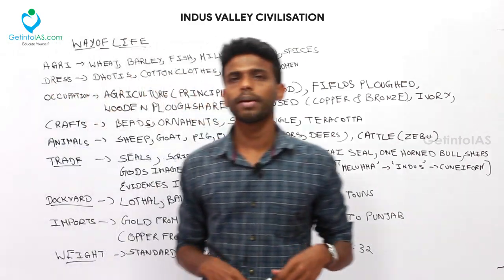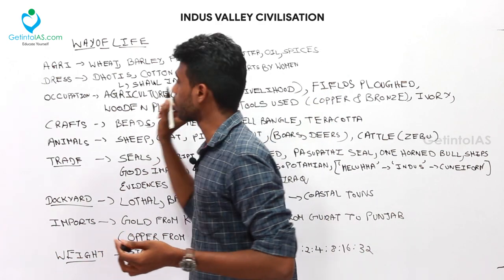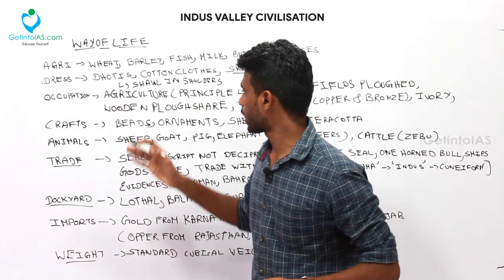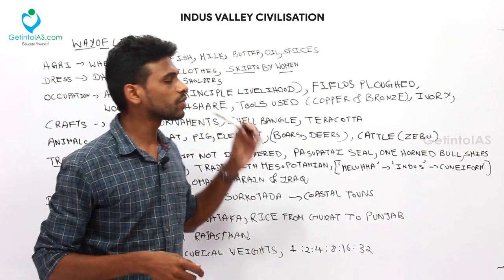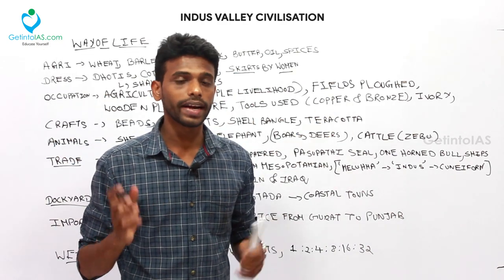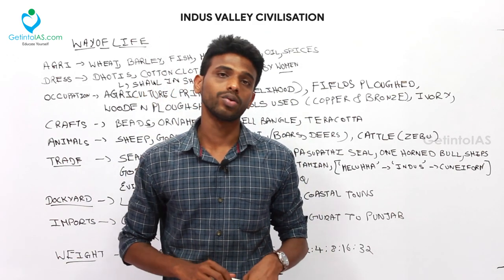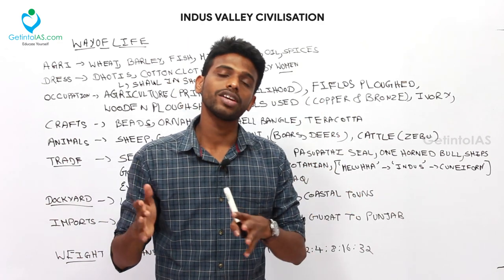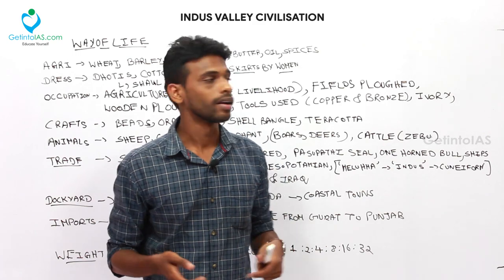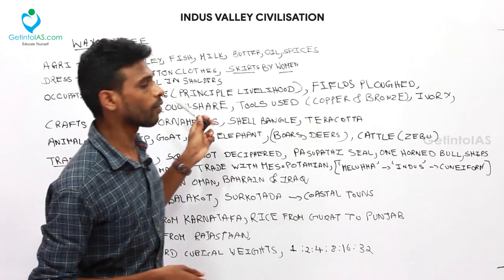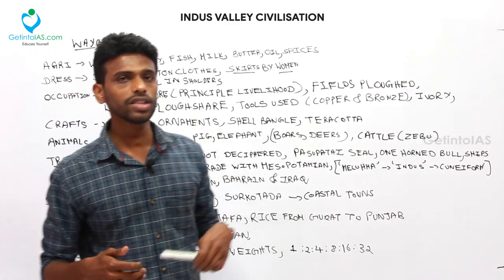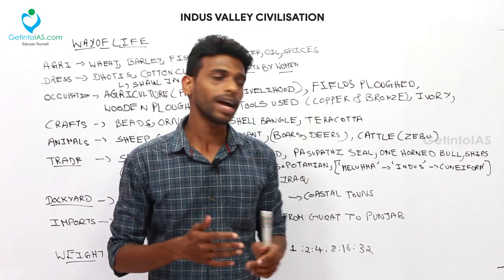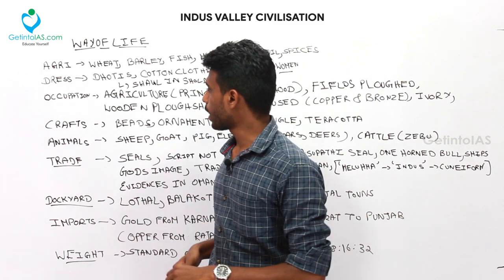Regarding dress, men preferred dhotis and a small shawl around their shoulders; women preferred skirts. Agriculture was the principal livelihood. Fields were plowed, as evidenced by furrow marks. Since it was a Bronze Age civilization, there was no iron — wooden plowshares were used. Only after the arrival of the Aryans in the Iron Age did iron plowing begin. Tools used were copper and bronze, and some ivory tools were also found.